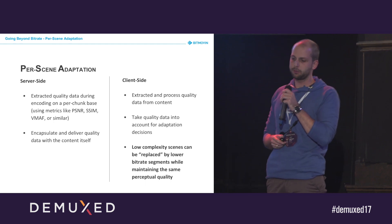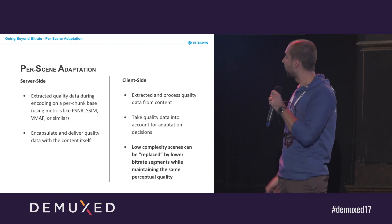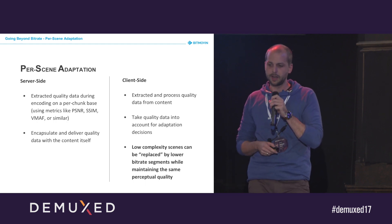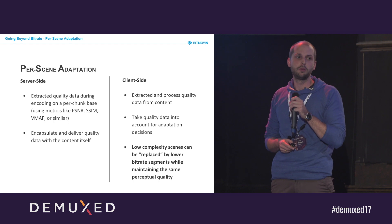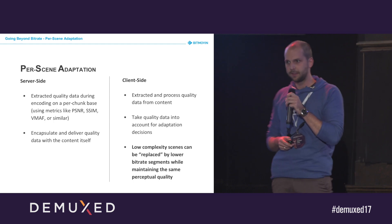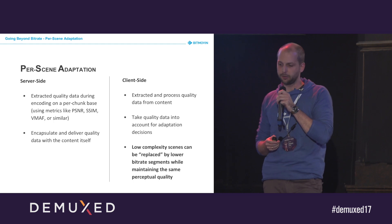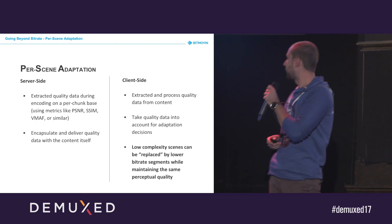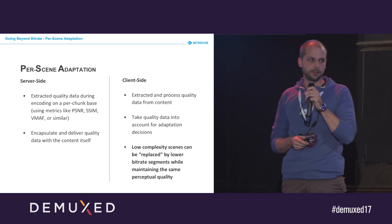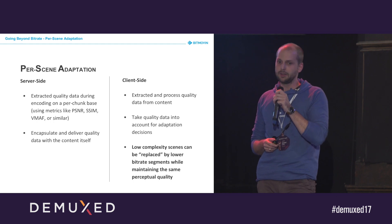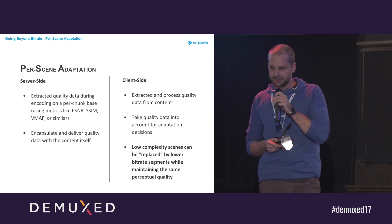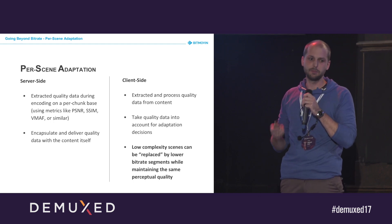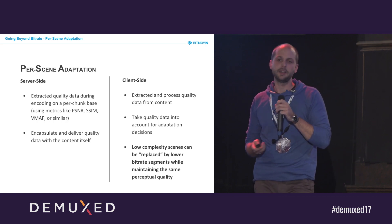On the client side, we need to extract the quality information from the content, process the quality data, and forward it to the ABR unit of the player. The player can then take this information into account, which means low-complexity scenes can be replaced by lower bitrate segments — without you seeing Bugs Bunny in the next Expendables. We simply replace higher bitrate segments with lower bitrate segments of the same scene without losing any perceptual quality.